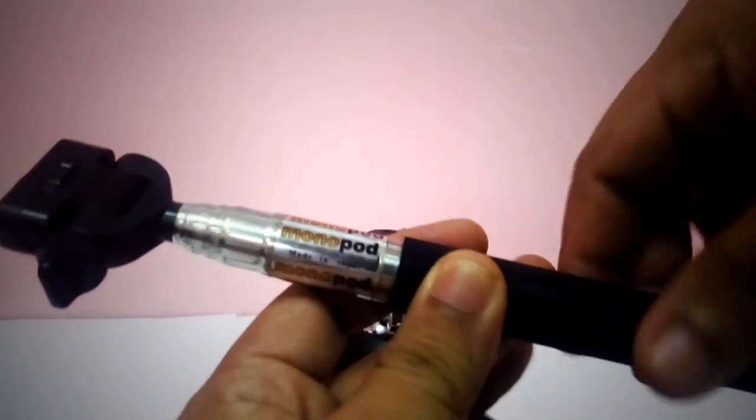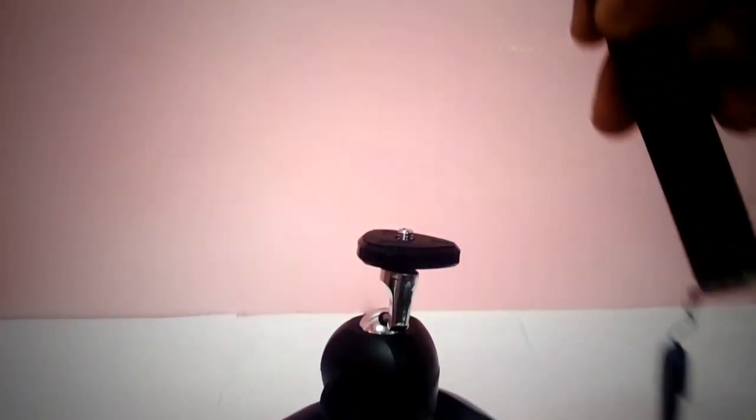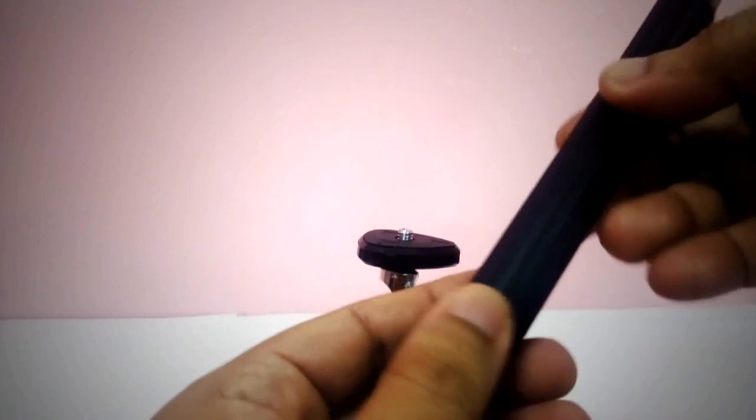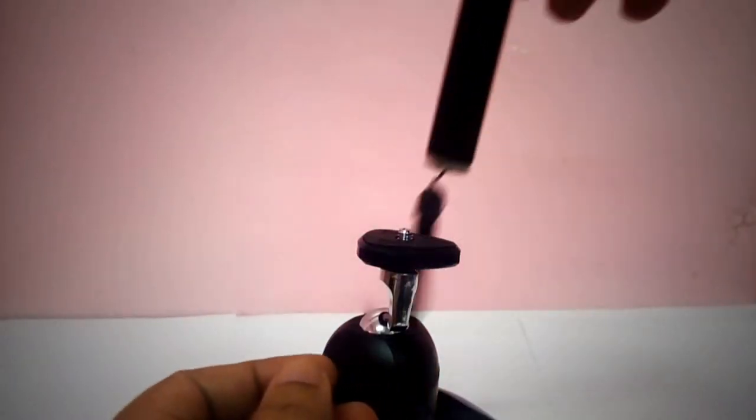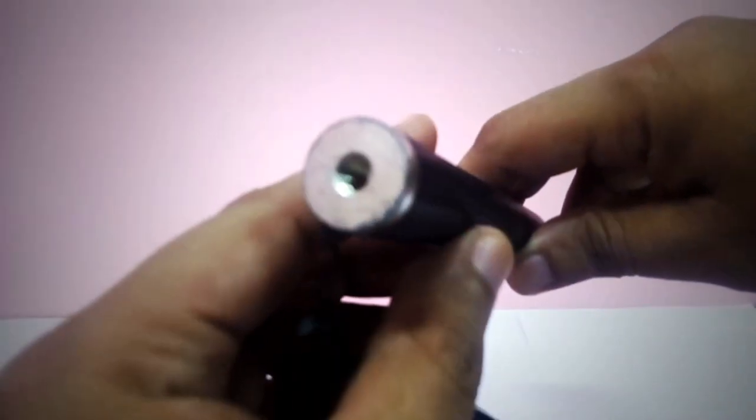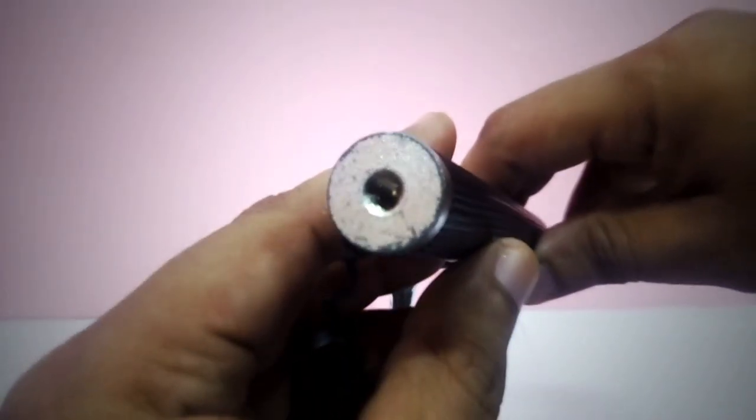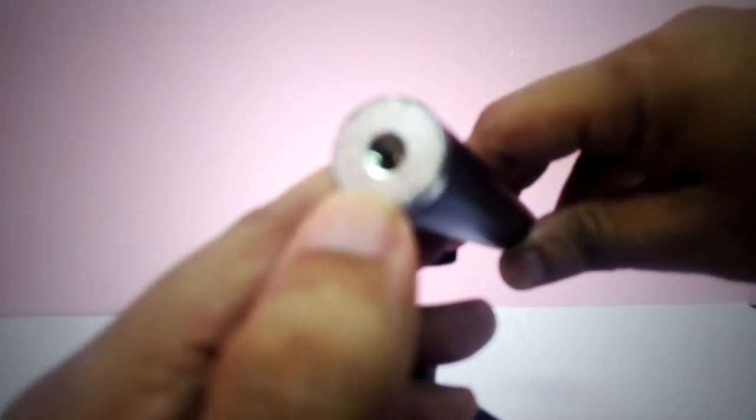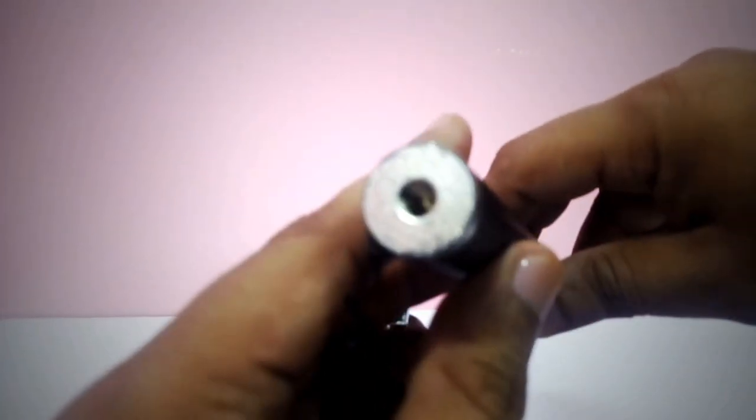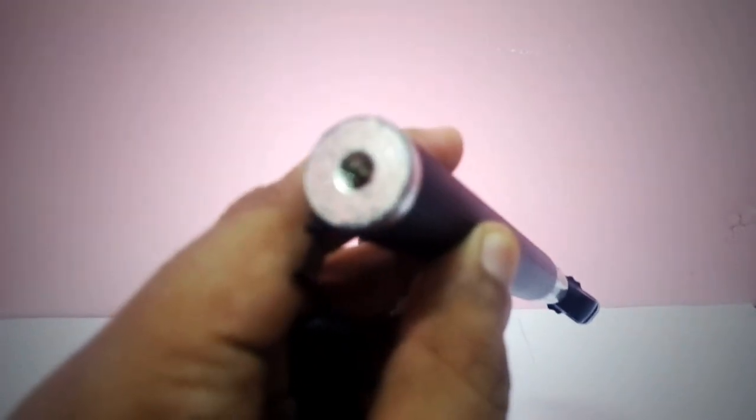So what we are going to do is place it here. As you can see here on our monopod, we have what we call, I think it is a screw hole.